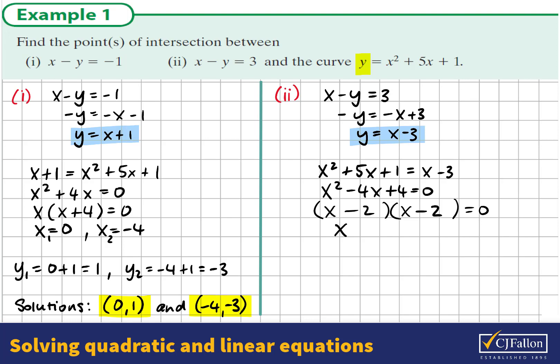So that gives a single solution: x equals positive 2. Now we know y equals x minus 3, so that's 2 minus 3, which is negative 1. So our solution is x equals 2 and y equals negative 1.